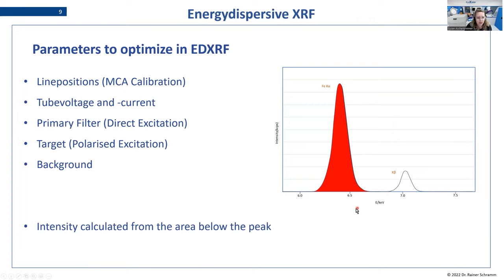We see the same thing for another sample with the same preparation and same application package — it's a feldspar. In this case, we have a lot of sodium in the sample. Again, the mean value is okay for the ED measurement, but the standard deviation is way higher than for the WD values. As we move further along the periodic system, the results become more comparable. For strontium, we see that we are even a little bit better in the ED than in the WD.